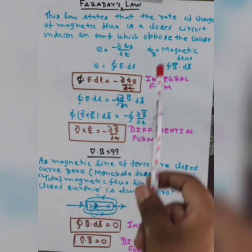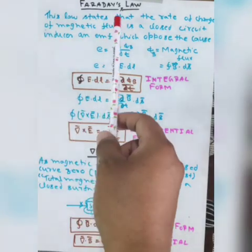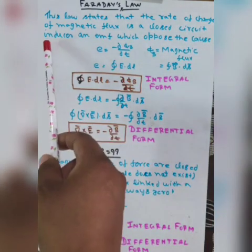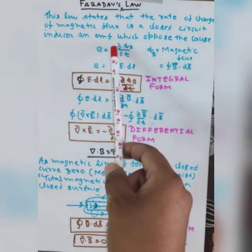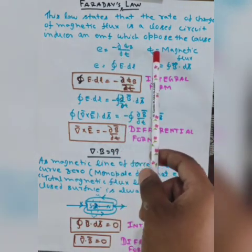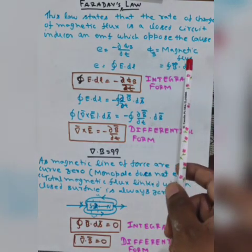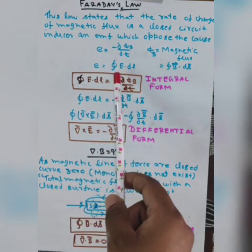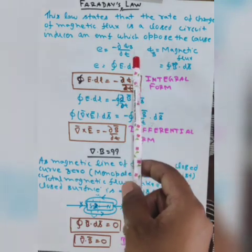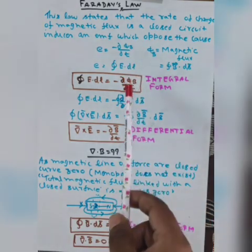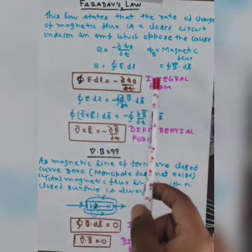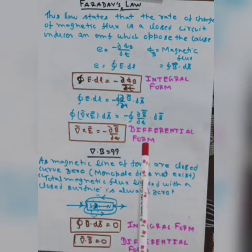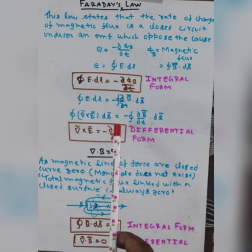In this slide we will discuss Faraday's law. This law states that the rate of change of magnetic flux in a closed circuit induces an EMF, which opposes the change — d phi by dt, where phi is the magnetic flux. We can also write the EMF in the form of the line integration of the electric field. Equating both relations, we get the integral form of Faraday's law. With the help of this relation and Stokes theorem, we can convert the integral form into the differential form: del cross E is equal to minus d phi by dt.